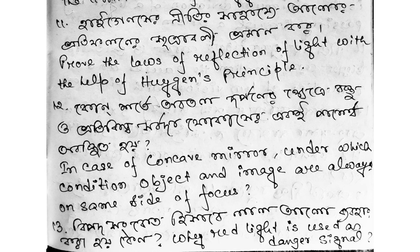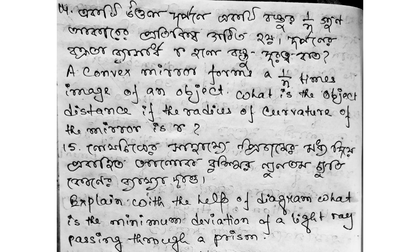In the case of a concave mirror, under which condition are the object and image always on the same side of the focus? The next question is: why is red light used as a dangerous signal?